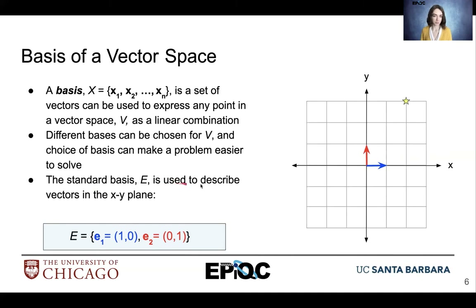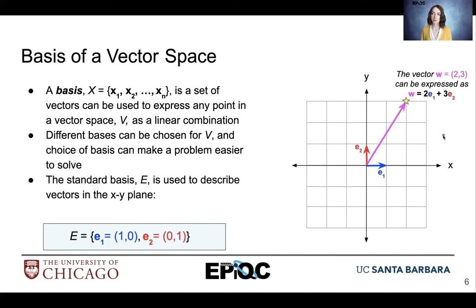Thinking about our xy plane example: we have states e1 and e2, which are simply unit steps on either the x or y axis. We can combine them to describe points of interest in our space. For example, the vector w can be expressed as a linear combination of e1 and e2. This is an example of how you would use a basis within your vector space.